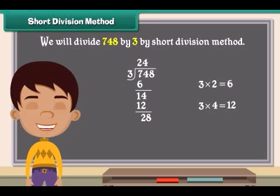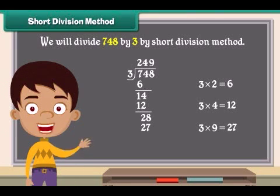Then divide 3 into 28. 3 nines are 27. 28 minus 27 is 1. Put your answer 1 as the remainder.